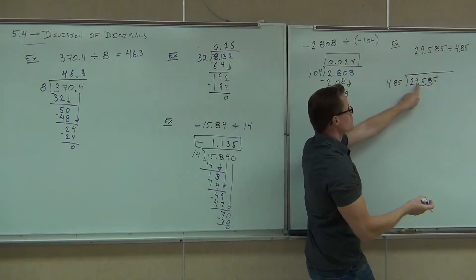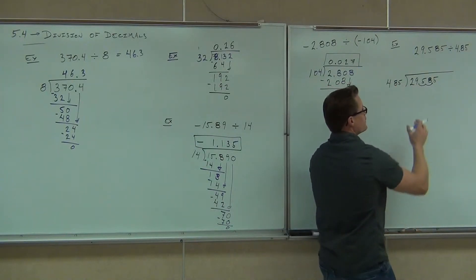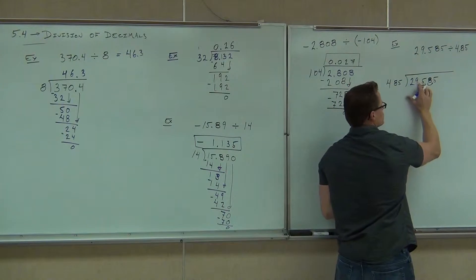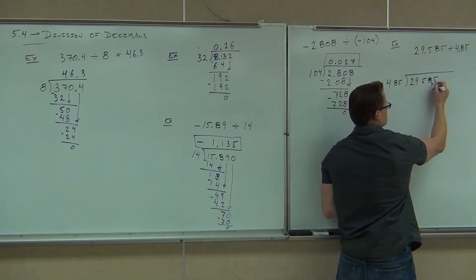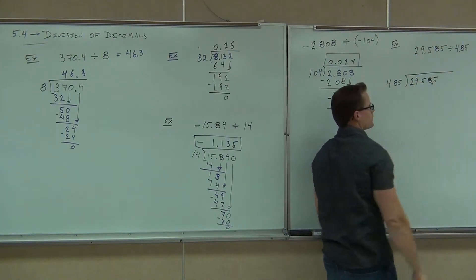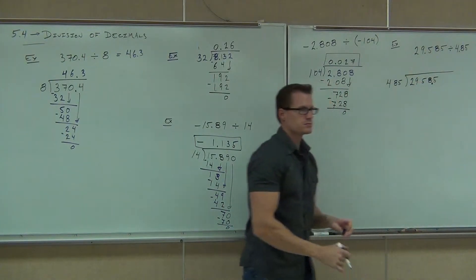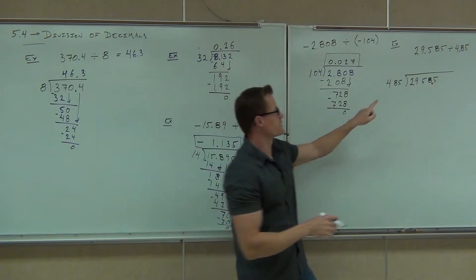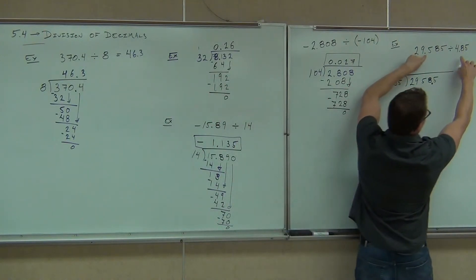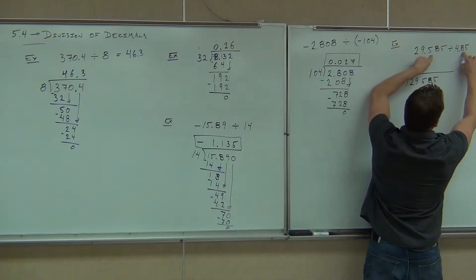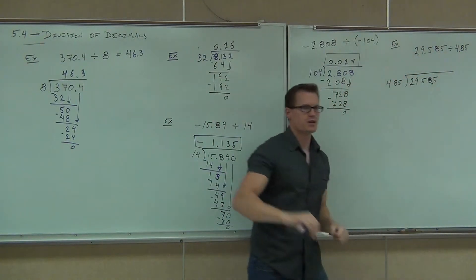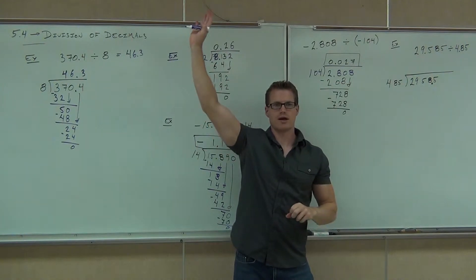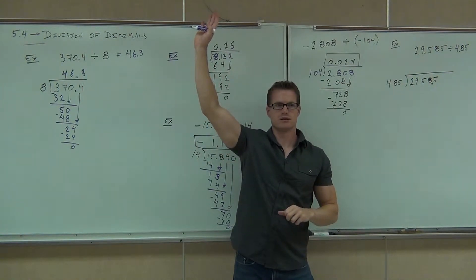Instead of being 29.58, it's 2058.5. So we've moved the decimal place two spots on both numbers. Raise your hand if you're OK with that. It's a big deal.